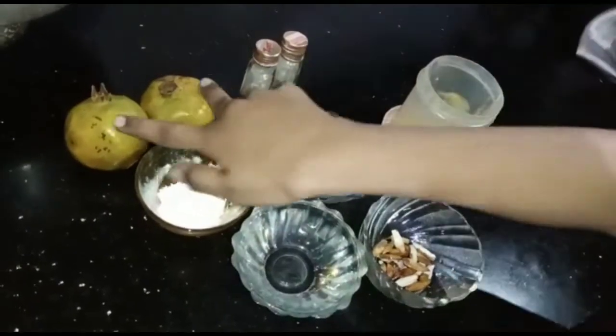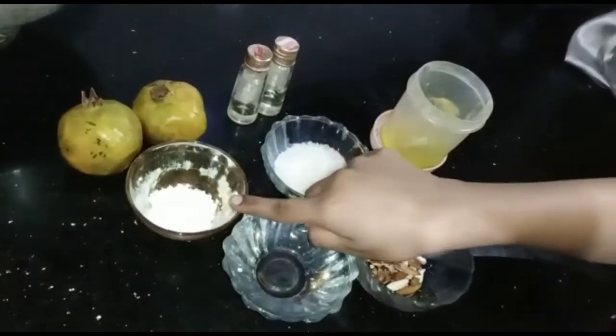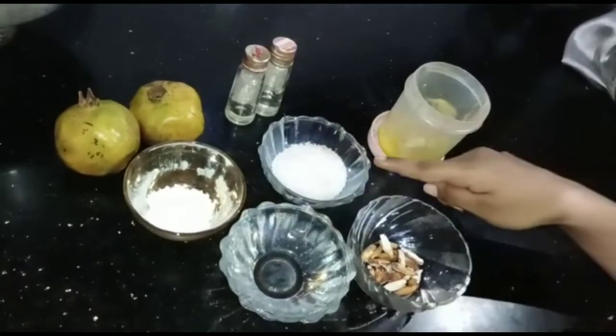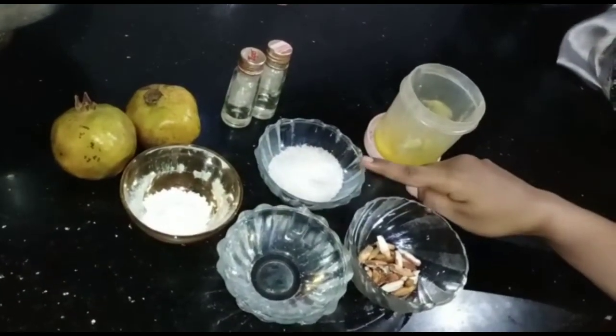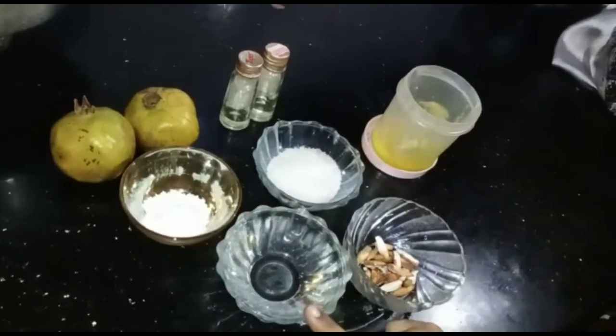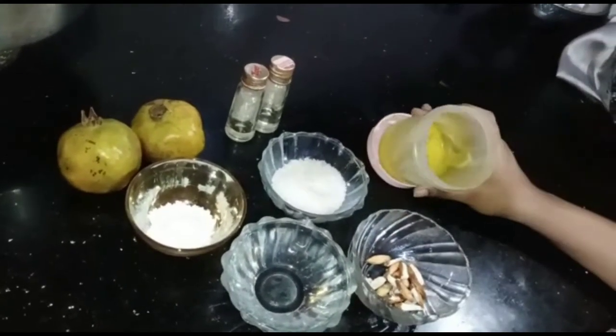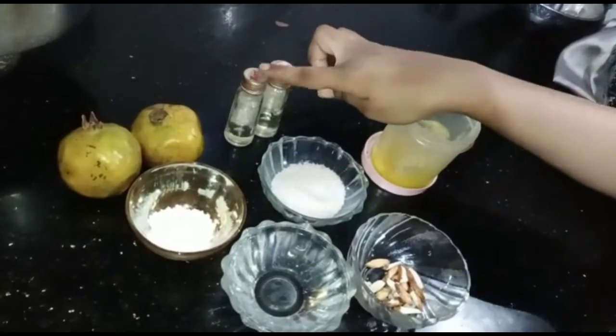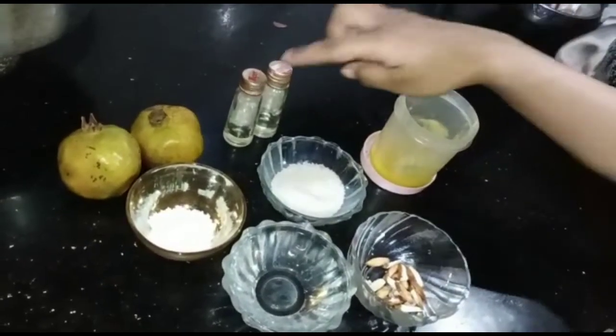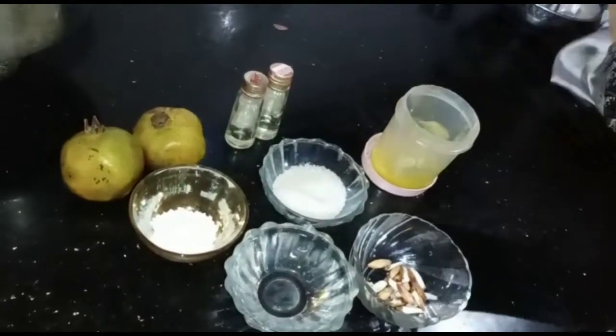For the ingredients, add 1 teaspoon of corn flour, add 5 teaspoons of sugar, add 1 cup of honey, add 1 teaspoon of ghee, add any essence, add vanilla and strawberry essence.